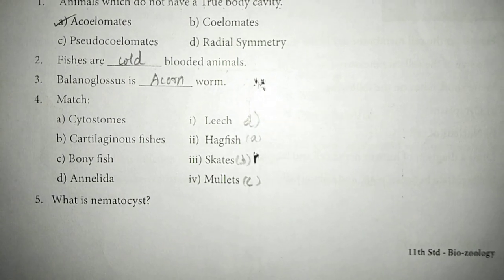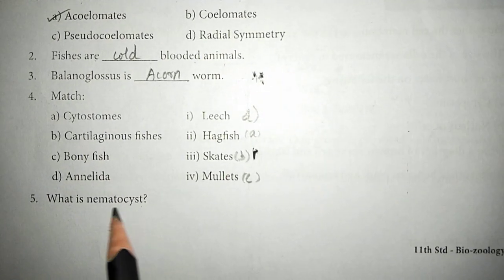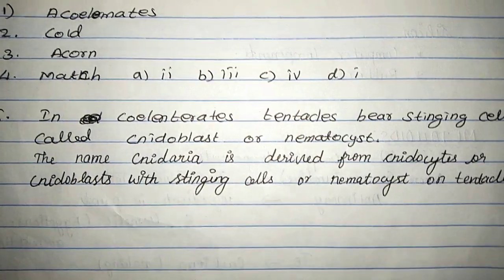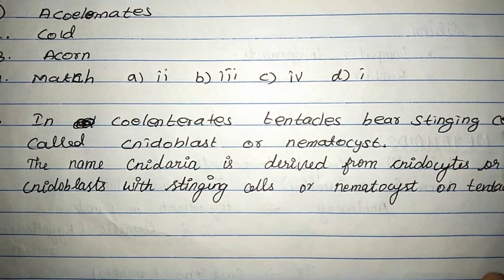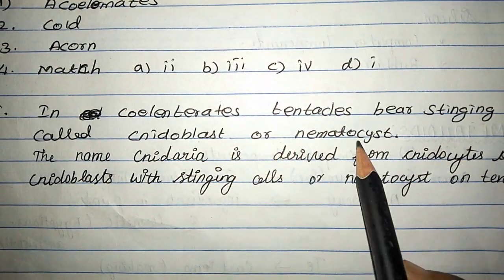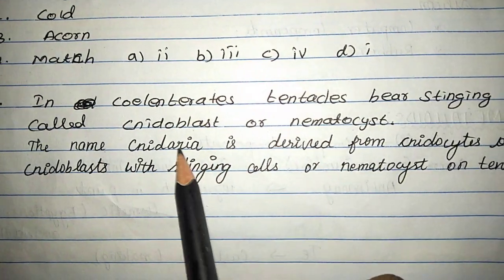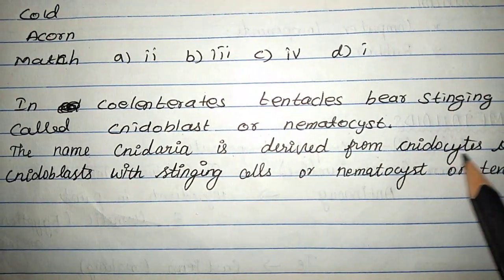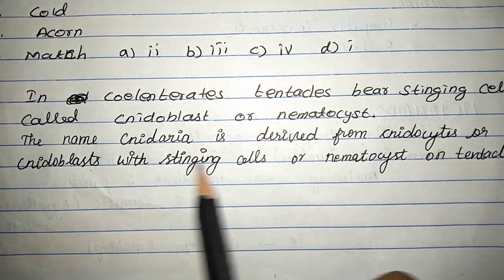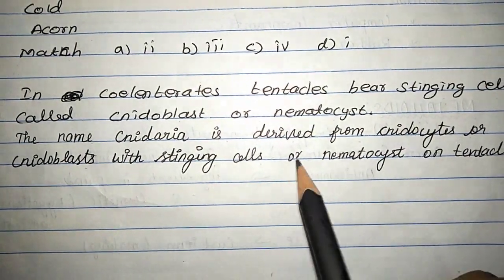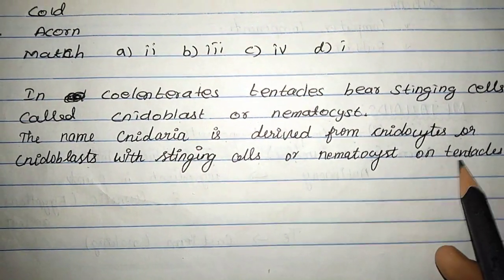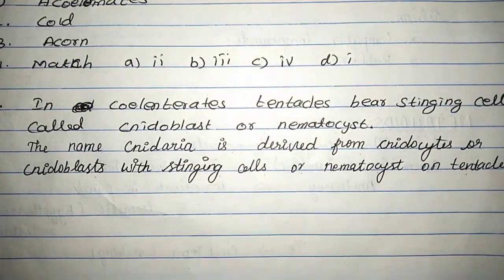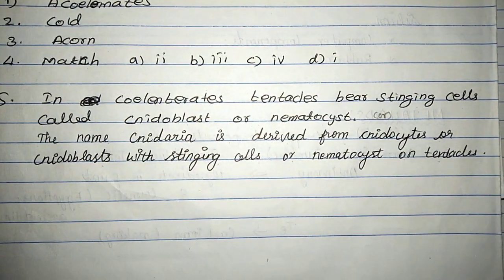Next question: what is nematocyst? In Cnidaria, tentacles bear stinging cells called cnidoblasts or nematocysts. The name Cnidaria is derived from cnidocyst or cnidoblast, with stinging cells or nematocysts on tentacles. This is the answer.